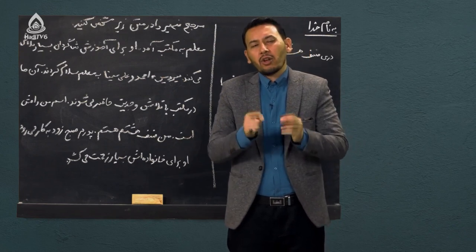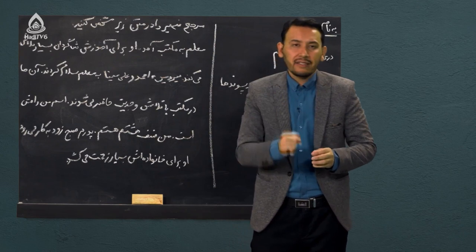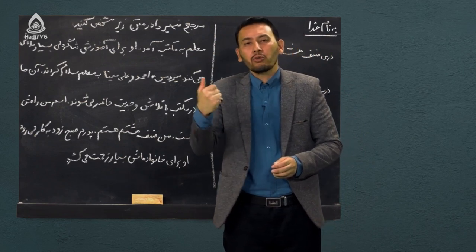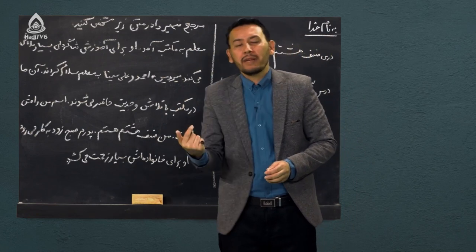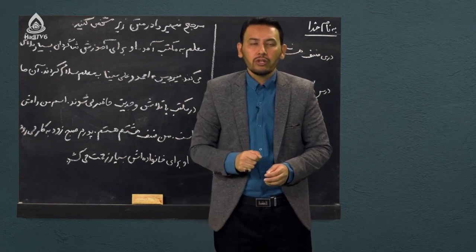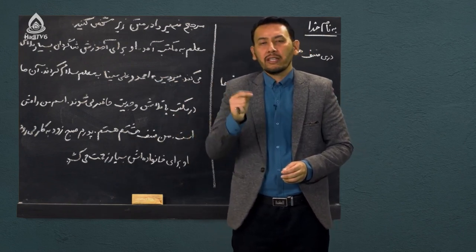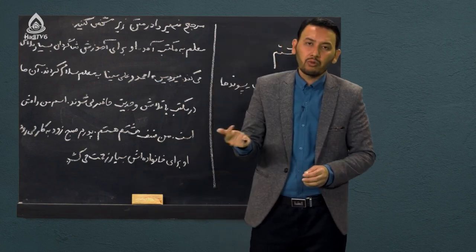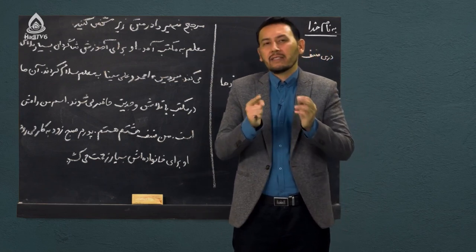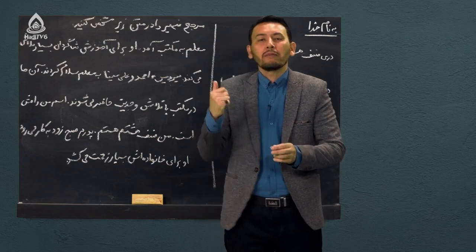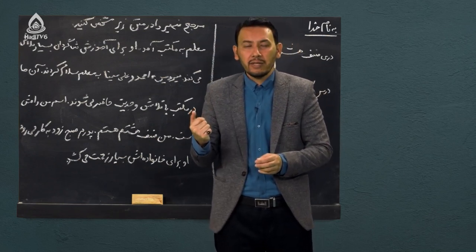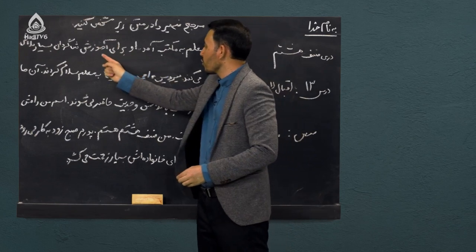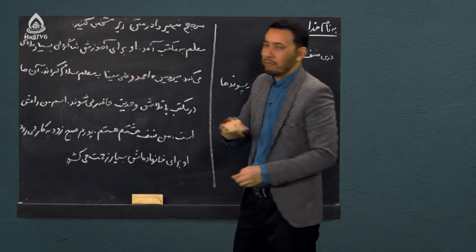جانشین اسم می‌شود چرا؟ به خاطری که جلوگیری می‌کند از تکرار آن اسم، تا متن زیبایی خود را از دست ندهد. این ضمیرهایی که در جای‌جای یک متن موجود است، یک مرجعی دارد - کلمه‌ای که ضمیر به آن برمی‌گردد، تحت عنوان «مرجع ضمیر». مثلاً: «معلم به مکتب آمد، او برای آموزش شاگردان بسیار تلاش می‌کند.»